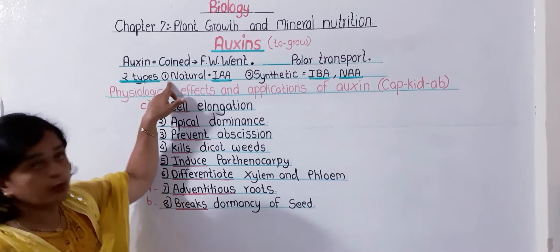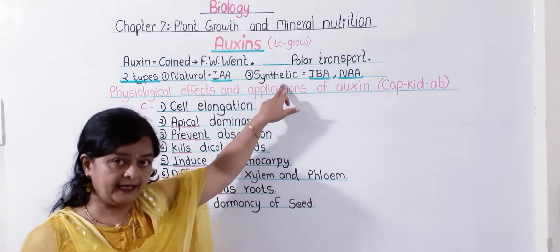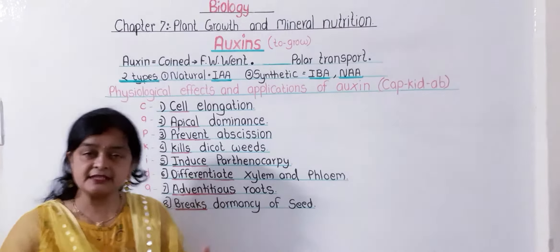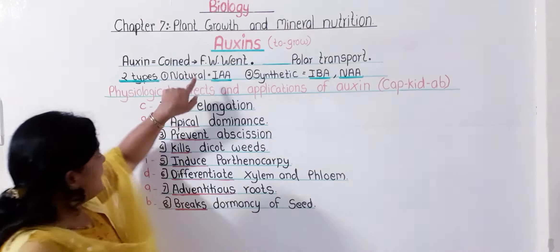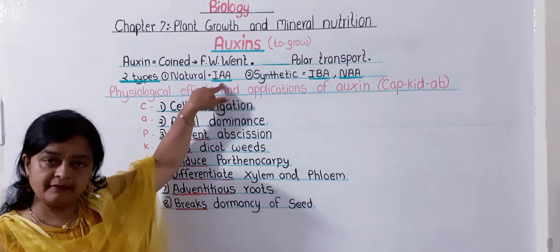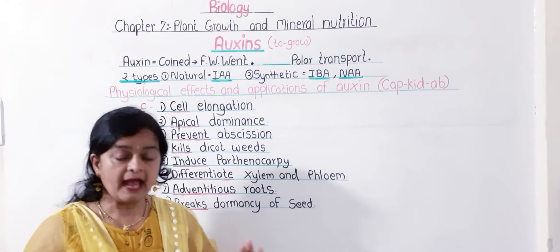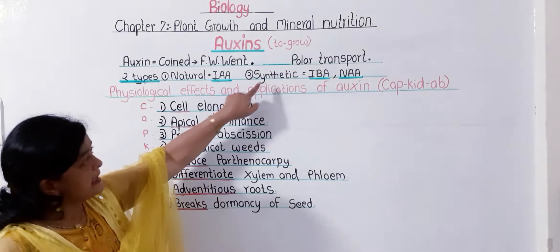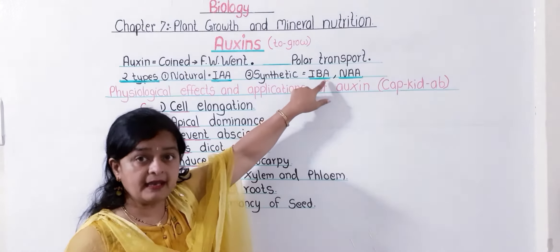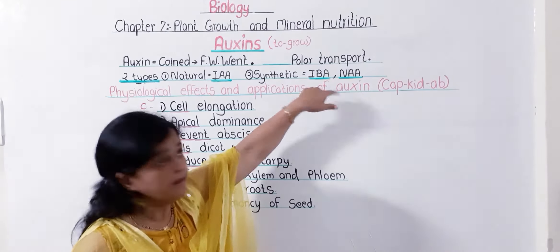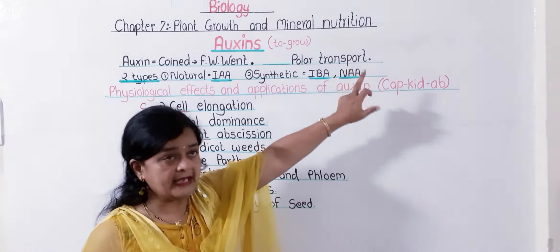There are two types of auxin. One is called natural auxin and another is called synthetic auxin. Natural means which is naturally produced in plants, and synthetic means it is man-made. A natural auxin example is IAA — indole-3-acetic acid. Synthetic auxin examples include IBA — indole-butyric acid — and NAA — naphthalene-acetic acid.